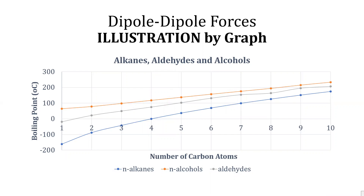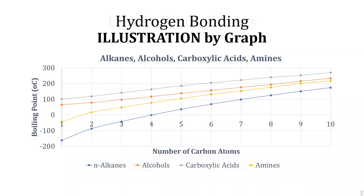This graphic illustration shows boiling points for various n-alkanes, aldehydes, and alcohols. Alcohols have the highest boiling point because they have hydrogen bonding compared to aldehydes which have dipole-dipole forces, and alkanes which only have London dispersion forces.